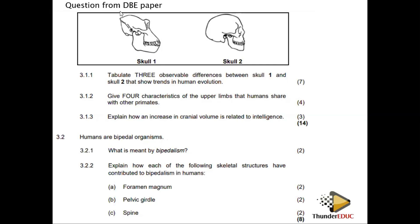Humans are bipedal organisms. Bipedalism means walking on two limbs or two legs. Explain how each skeletal structure contributes to bipedalism: (1) Foramen magnum — forward position, allowing the spine to connect directly to the skull. (2) Pelvis — short and wide, providing surface area to support upper body weight. (3) Spine — S-shaped, which allows absorption of compression so the organism can stand upright.